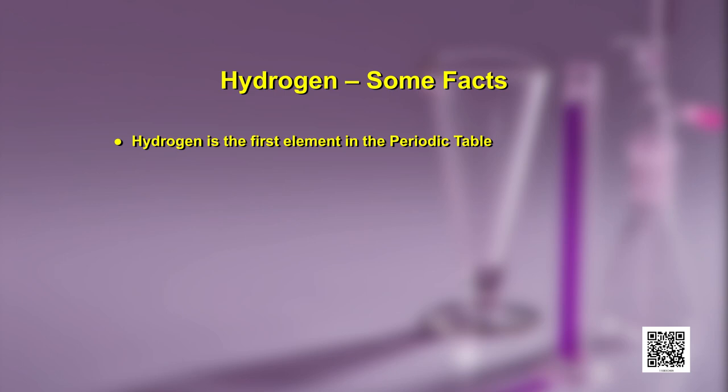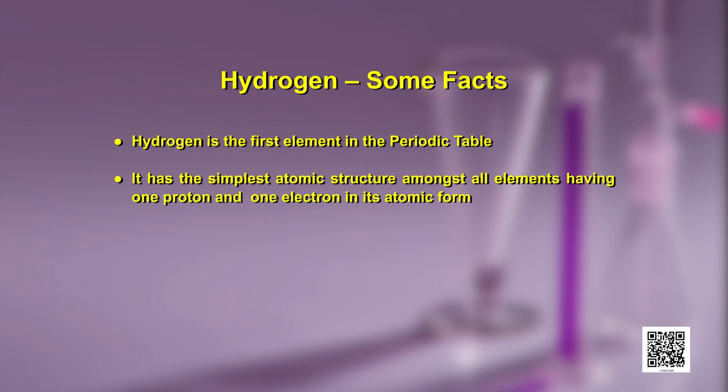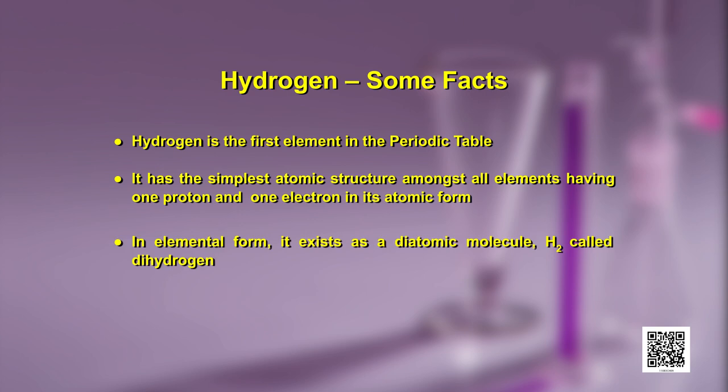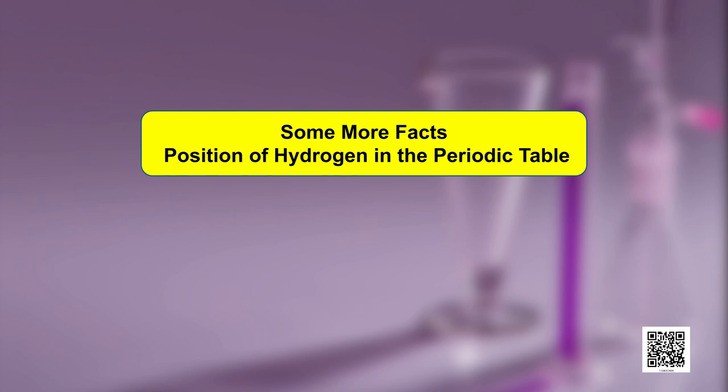Let us have a glimpse of some facts about hydrogen. Hydrogen is the first element in the periodic table. It has the simplest atomic structure amongst all elements, having one proton and one electron in its atomic form. In the elemental form it exists as a diatomic molecule H2, called dihydrogen. It forms more compounds than any other element. So let us explore some more facts about hydrogen to understand its position in the periodic table.